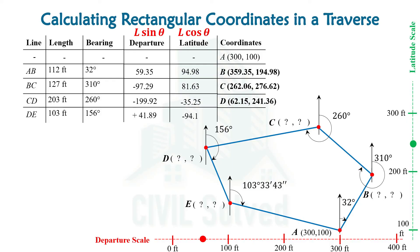On doing the calculation we will be having the departure and latitude of the DE line, and it will be added with point D in order to calculate the coordinates of point E. On doing the calculation we will ultimately have the coordinates of point E, which can be shown on the latitude and departure scale as well.